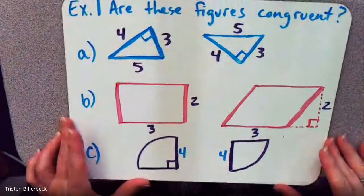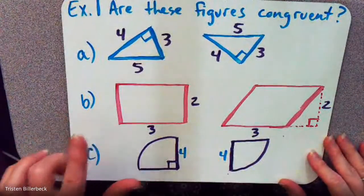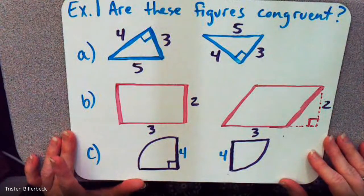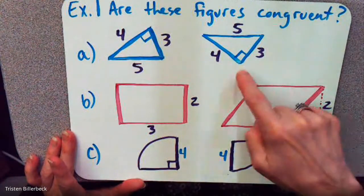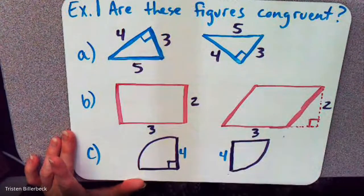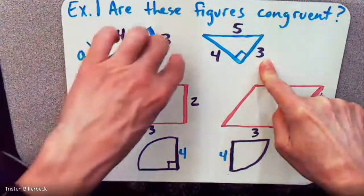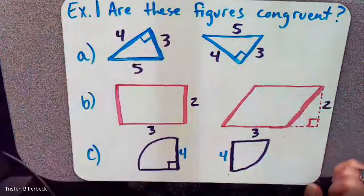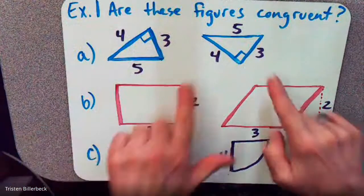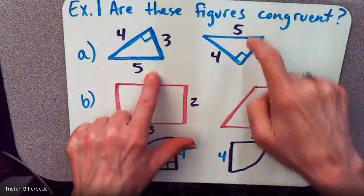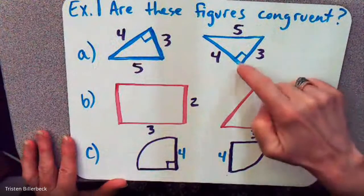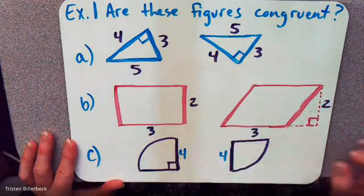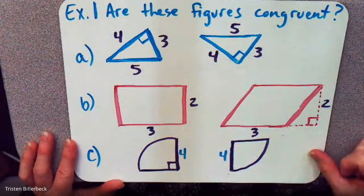If we look at these two figures, we want to determine whether the corresponding angles are congruent. We have one right angle here, and the two sides on each side of this right angle have the same measurements. The fives are on the hypotenuse, which is across from the right angle, so that would make these two triangles congruent.